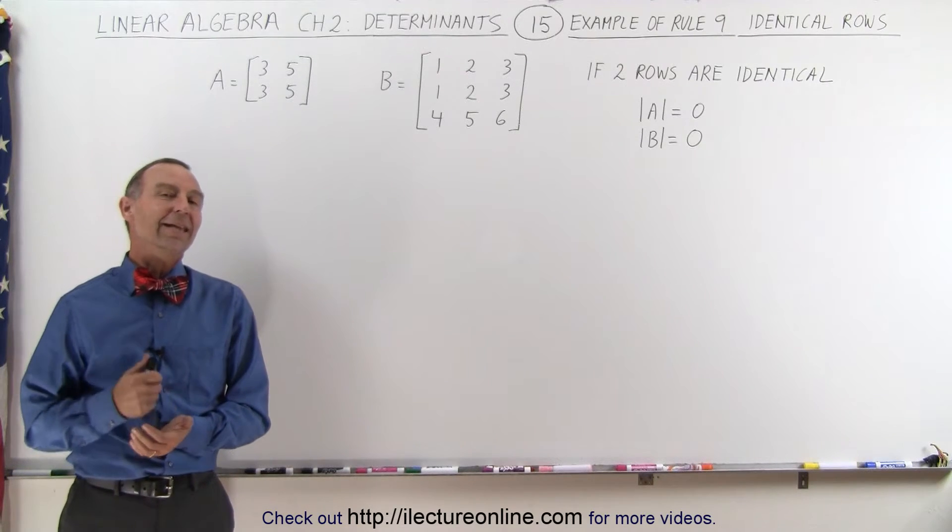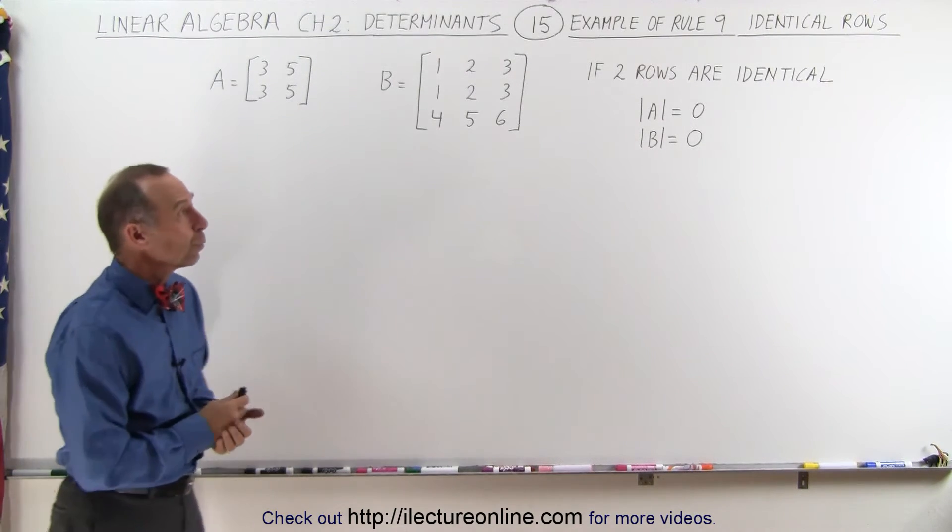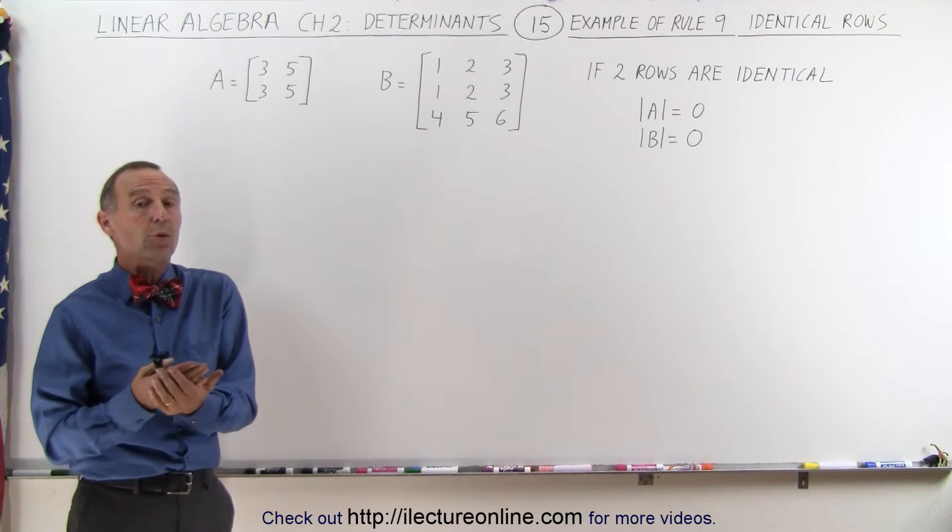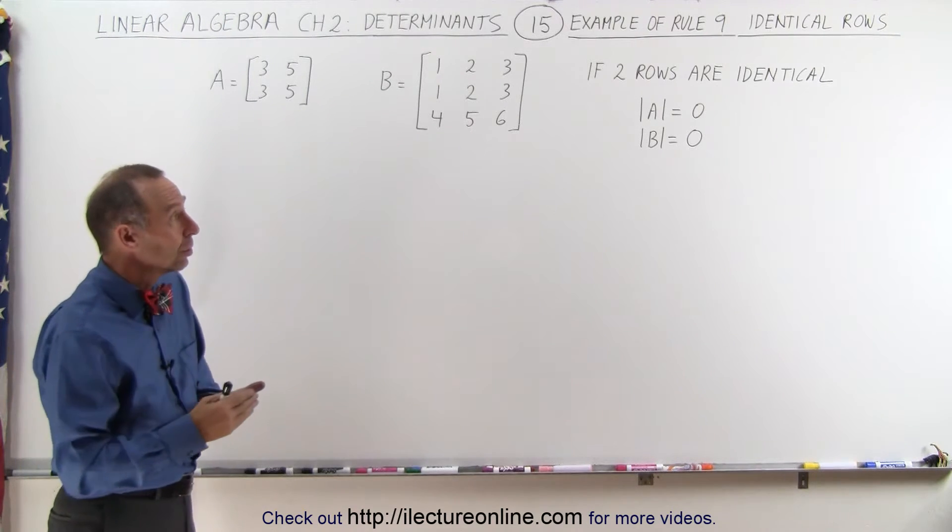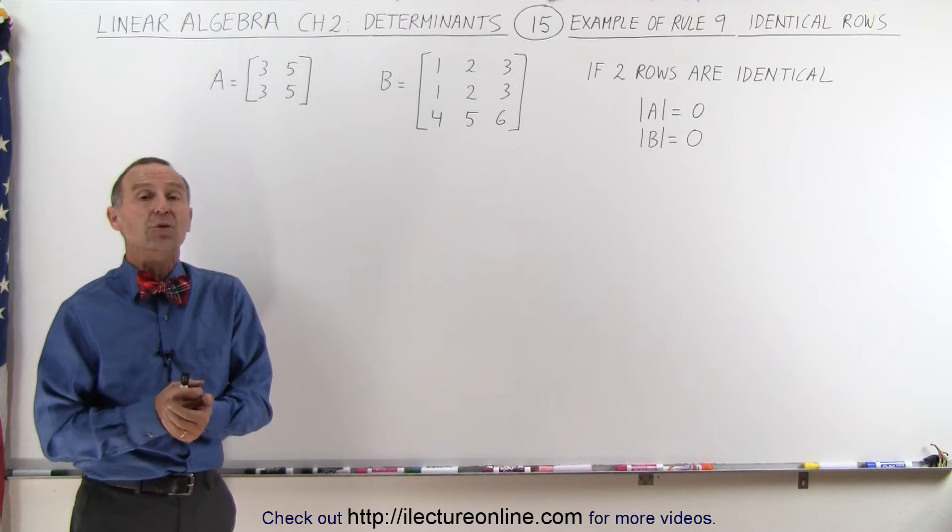Welcome to ElectronLine. Now let's take a look at rule number nine which says that if two rows in a matrix are identical, the determinant of that matrix will equal zero.